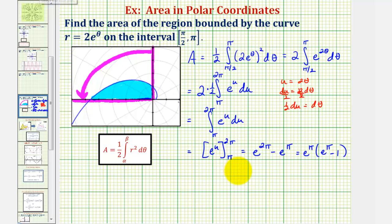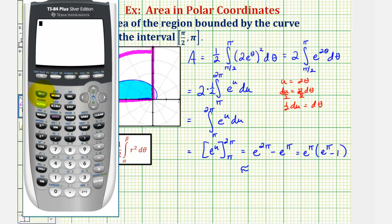Let's also get our decimal approximation. We have e raised to the power of two pi minus e raised to the power of pi, which would be approximately five hundred twelve point three five one zero. That would be square units.